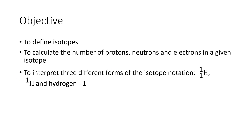To wrap up our objectives: isotopes are different versions of the atoms of an element that have different numbers of neutrons, meaning they also have different masses. We want to be able to calculate the number of protons, neutrons, and electrons in an isotope, and correctly interpret the three forms of isotope notation — and from that notation, calculate the proton, electron, and neutron counts.